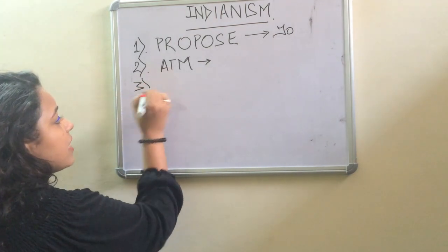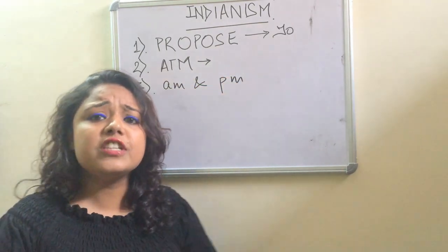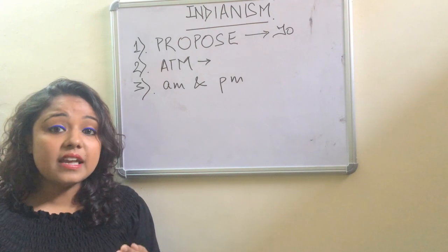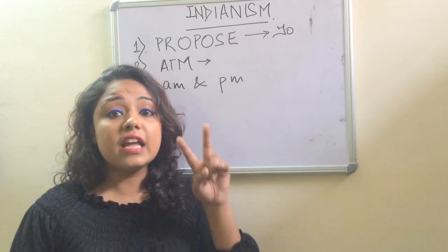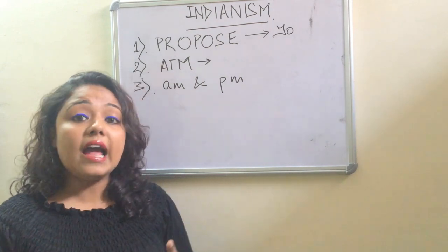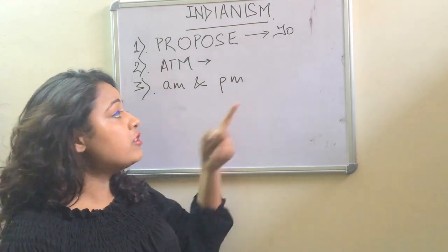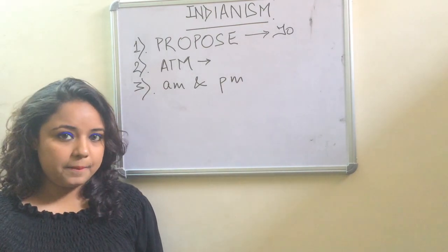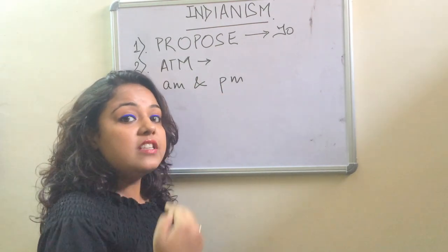The third thing is the usage of AM and PM. If you say 'I get up at 7 AM in the morning,' you are wrong — because AM automatically means it is happening in the morning. The two correct forms are: 'I get up at 7 AM' or 'I get up at 7 in the morning.' Similarly for PM: 'I sleep at 11 PM' — you do not need to add 'at night.' AM and PM already denote what time of day it is.